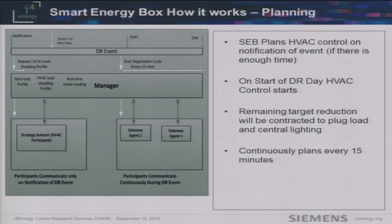Central lighting can be turned off and you can immediately see the load shedding. We also have distributed load control where we can contract load shedding throughout the building — agents can control laptops, lighting, or any equipment not centrally controlled. We adapted an adaptive approach where it communicates every 15 minutes and tries to achieve as much of the target as possible.